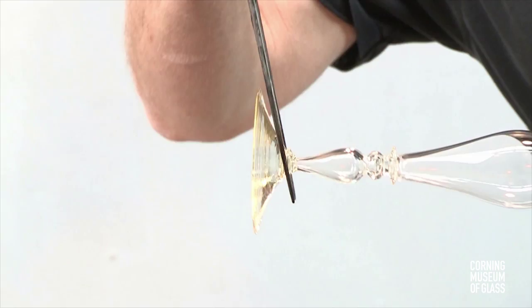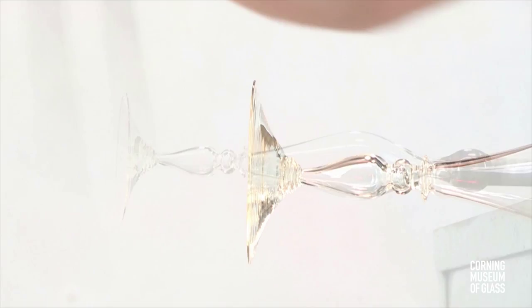After giving the foot its final shape, a punty or pontal is added to the base, and the goblet is broken free of the blowpipe.